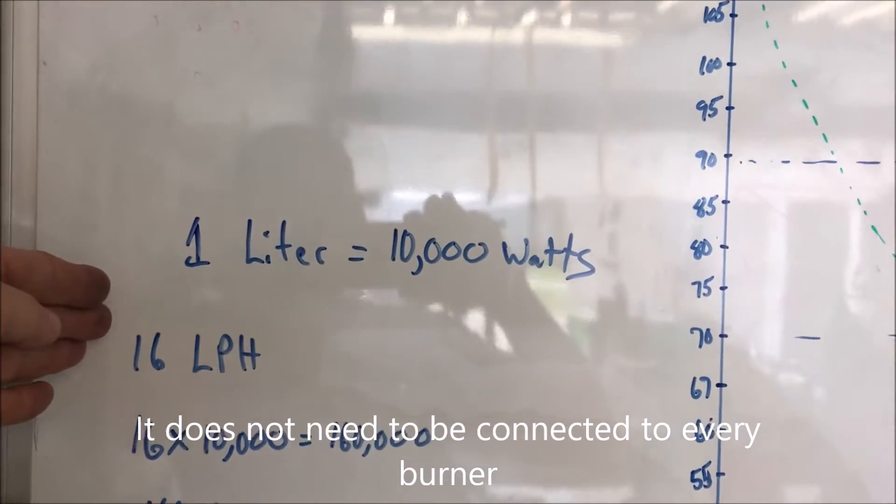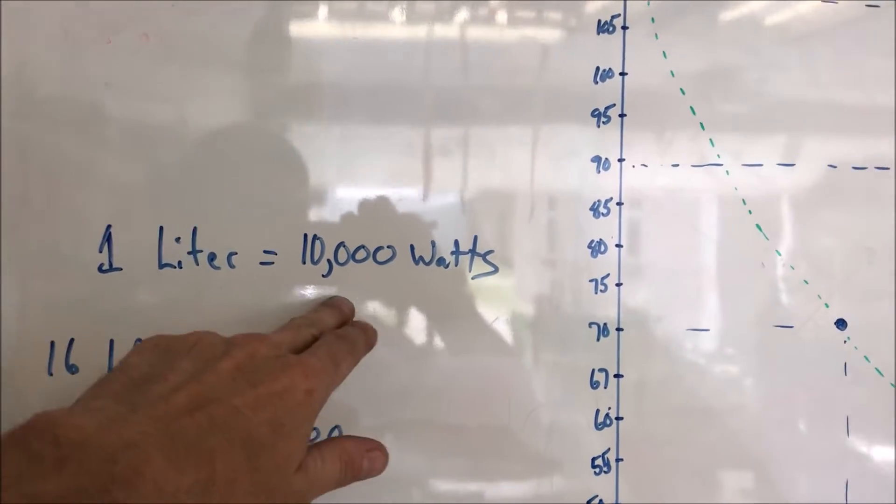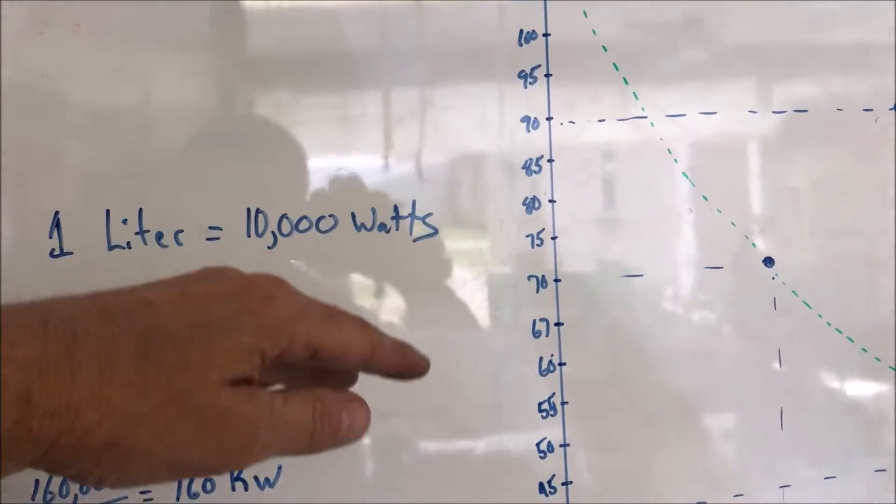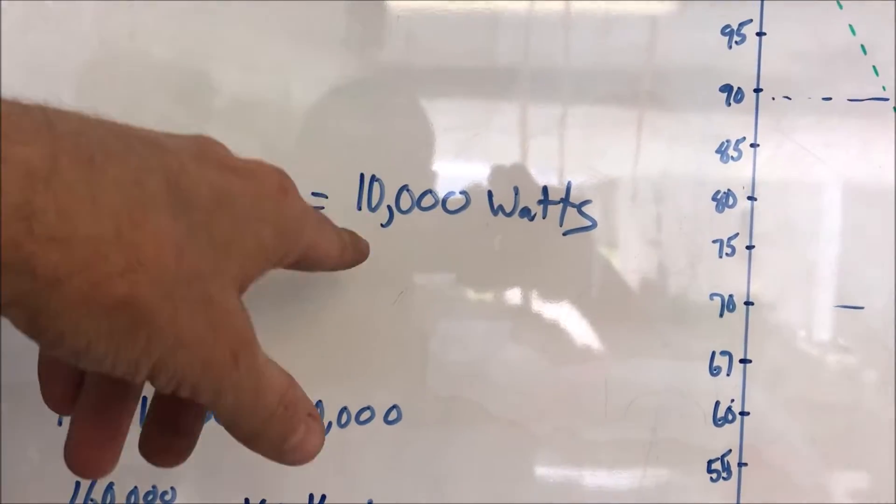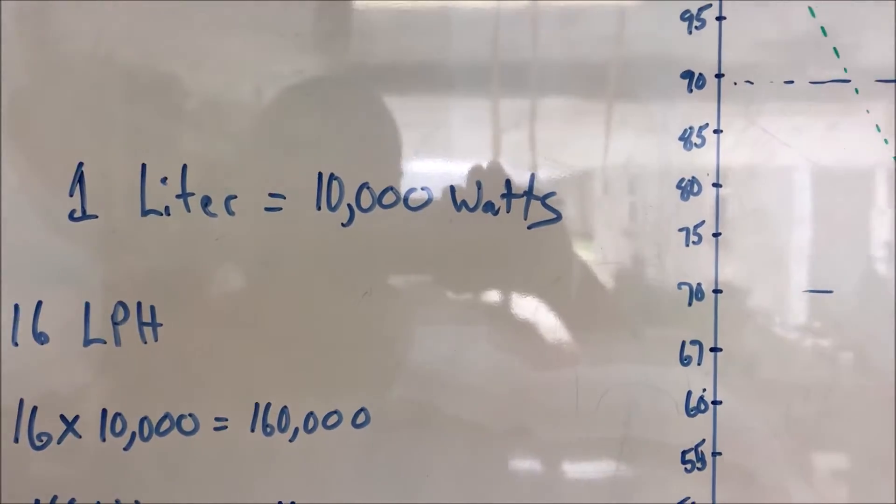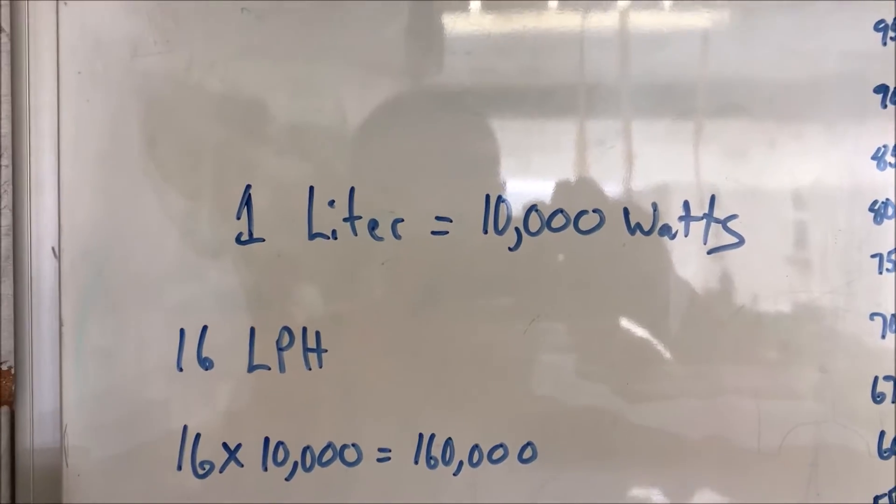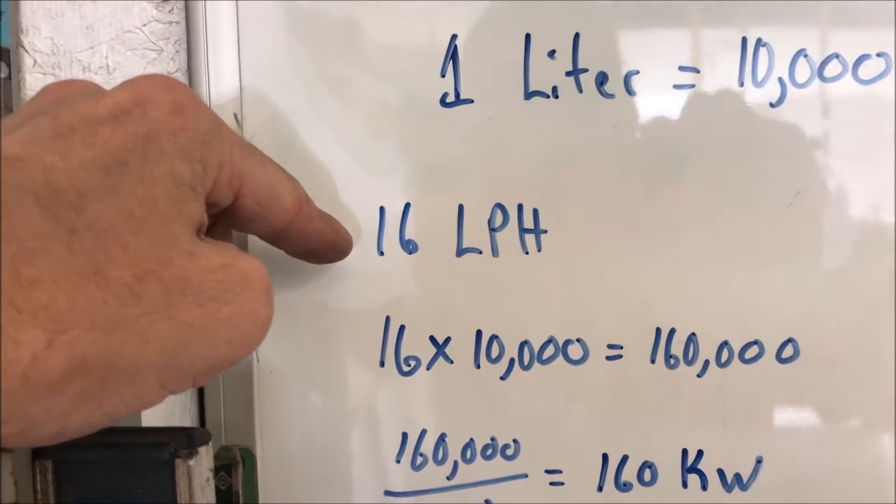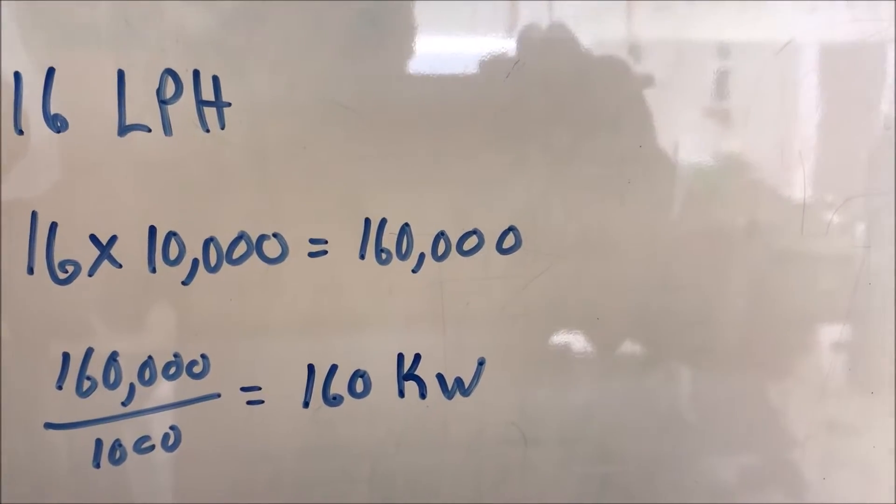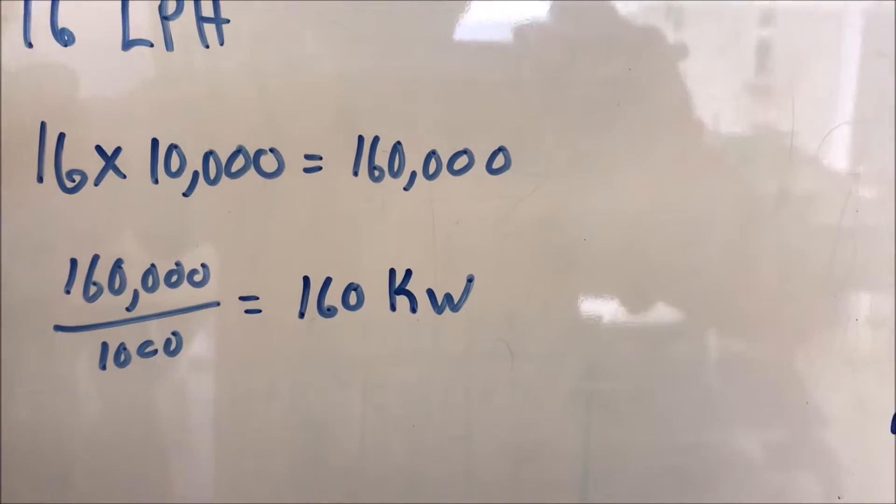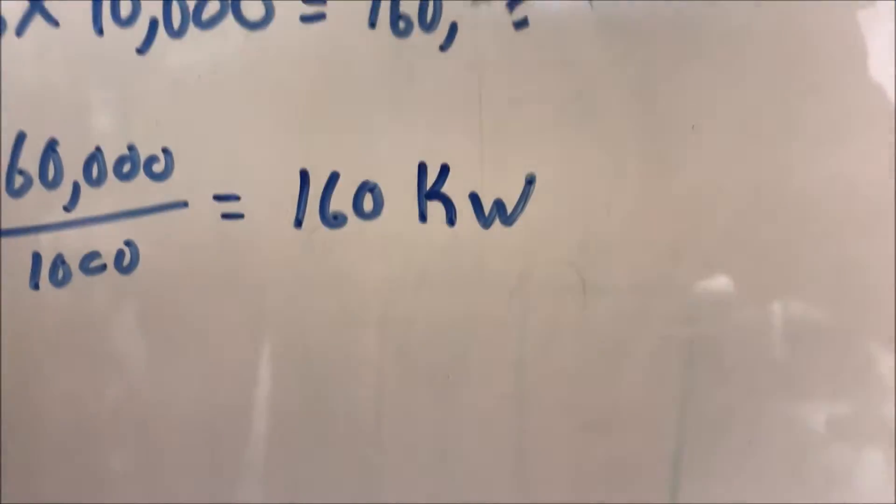And that would give him a liter per minute output. So essentially, what it comes down to is every liter per hour you burn is 10,000 watts of power. It fluctuates a little bit between fuels, but this is the diesel fuel power and the waste oil. They're all real close to that. That's a good enough approximation, in my opinion. You can find out the actual kilojoule output of your fuel in many different ways. But in an example, let's say you burn 16 liters per hour. We multiply 16 by 10,000. We get 160,000. We divide that by 1,000 and come up with 160 kilowatts. It's basically just knock off three zeros off the number you come up with. And that's your kilowatt output.